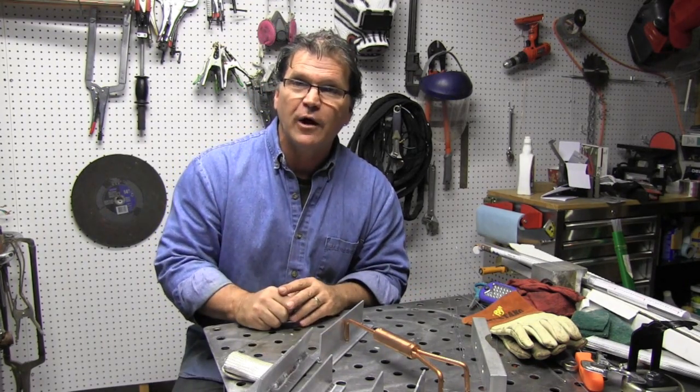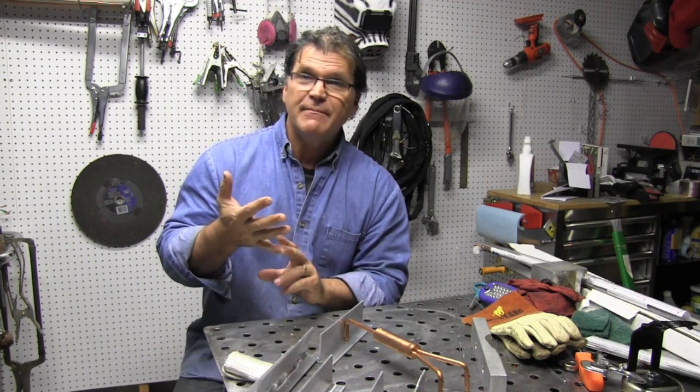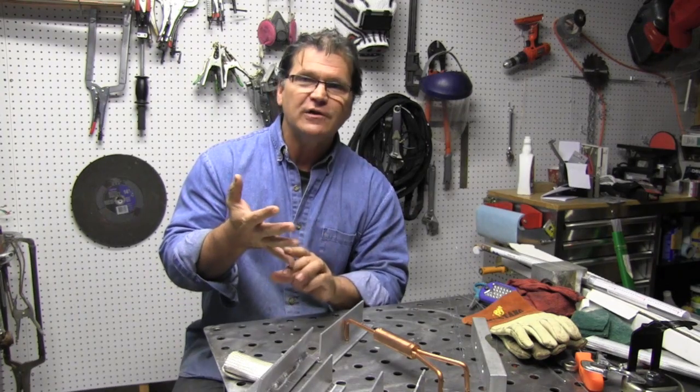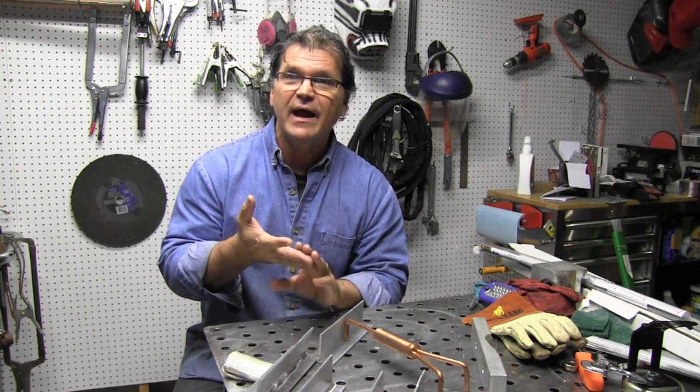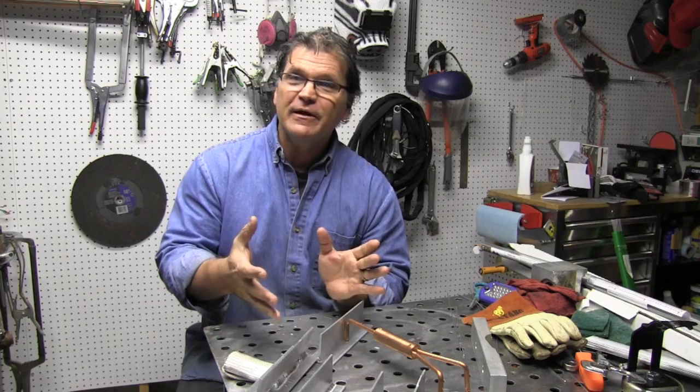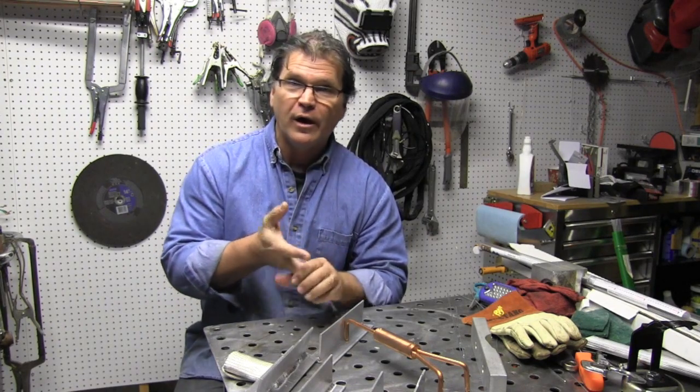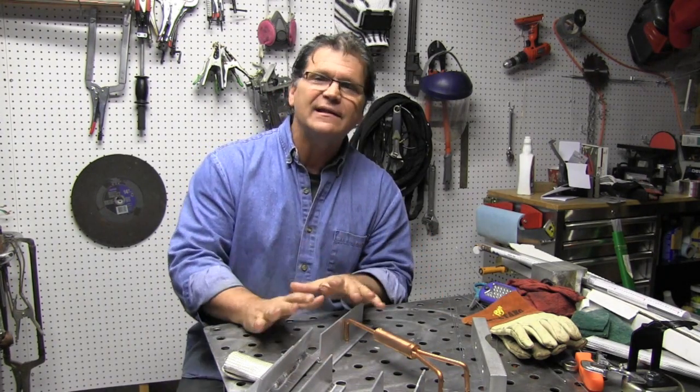I'm trying to keep a decent looking fillet weld. It's basically the same as it is on carbon steel - it's arc length and torch angle and having the right amperage. The only thing is on aluminum all that matters way more than it does on carbon steel. It's a lot less forgiving.